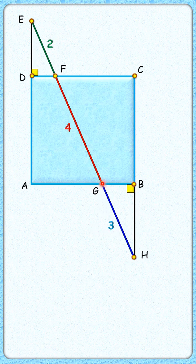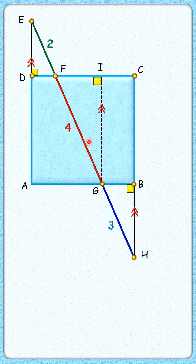Let's drop a perpendicular from G on CD. These three line segments are parallel to each other, and these two angles are corresponding angles and thus equal to each other. Also, the angle at point G and this angle are alternate interior angles, and thus both equal alpha degrees.